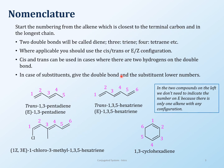Nomenclature of conjugated systems is just like naming double bonds — nothing different from alkenes. The only thing you'll have to say is that something is a diene, triene, or tetraene. When there are more, you can say polyenes. And when you mention polyenes, it generally means conjugated as well.